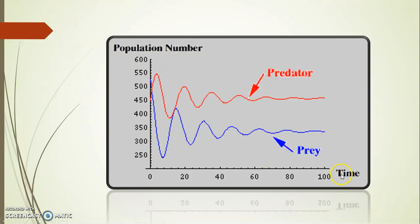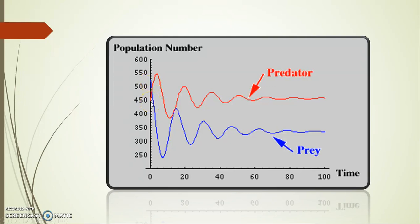This graph represents the predator-prey model with respect to time on the x-axis and population number on the y-axis. The blue color indicates the prey. Here the prey population number is approximately 525, while at that point the number of predators is only about 450 — meaning prey is more than predator. At another point, predator is approximately 550 while prey is decreasing. So if predator is increasing, prey is decreasing.